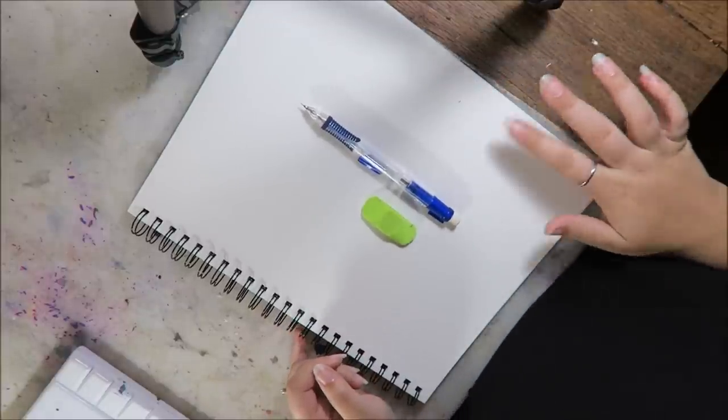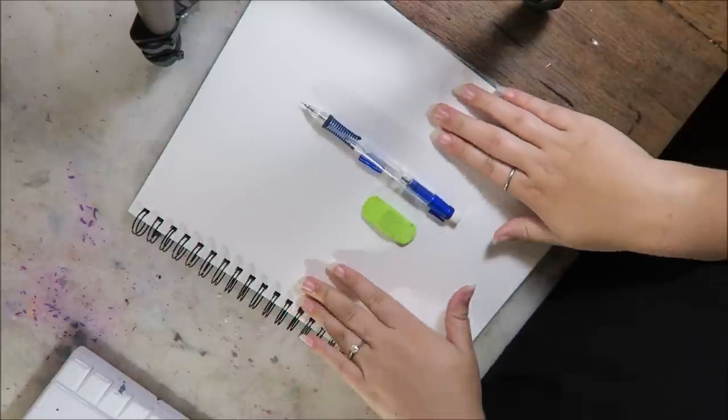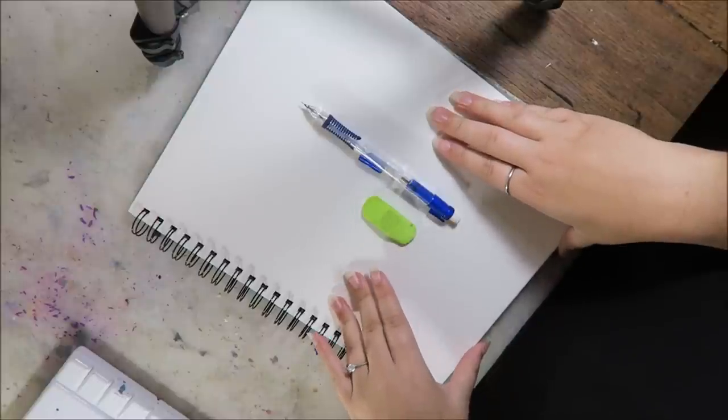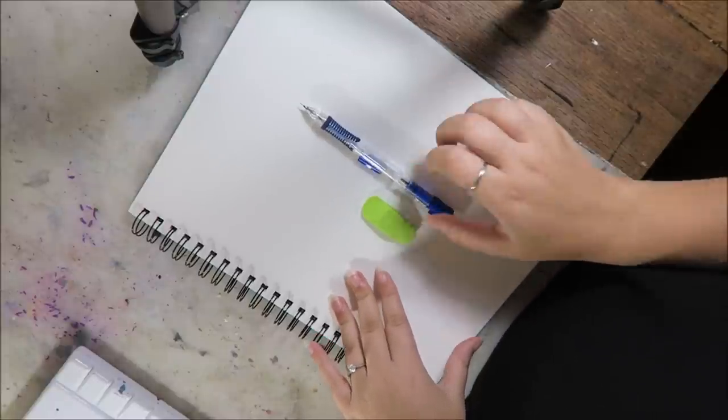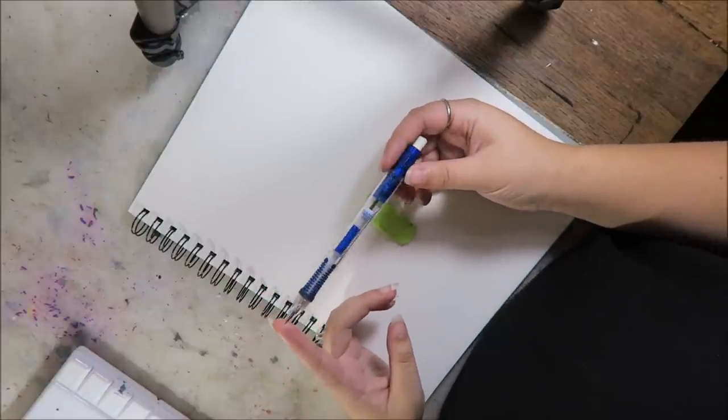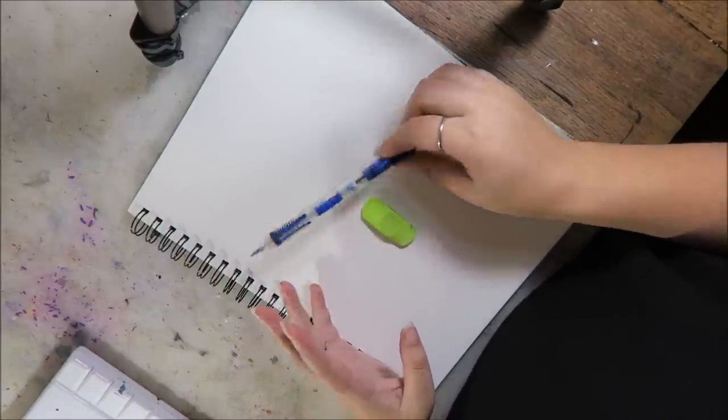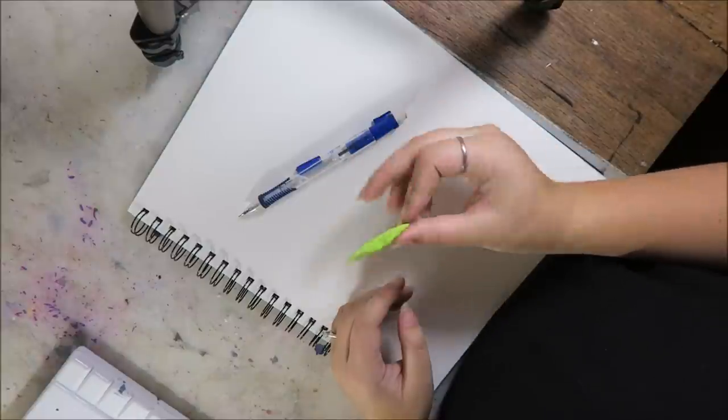All I'm going to be using today is this watercolor paper. This is my Canson Montval watercolor sketchbook in 9 by 12 inches. I'm going to be using this Papermate mechanical pencil. This is the mechanical pencil I use to do all my sketches with because I just love it. And then just this no-name eraser.